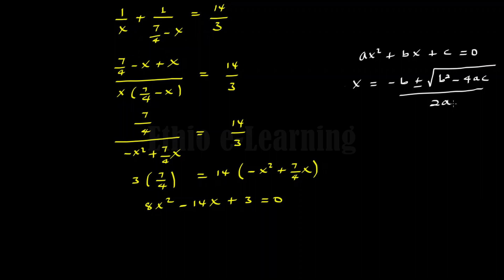From our quadratic equation, the coefficients are: a equals 8, b equals negative 14, c equals 3. The solutions are x is equal to 3 over 2, and x is equal to 1 over 4.